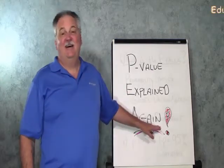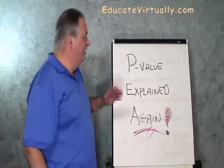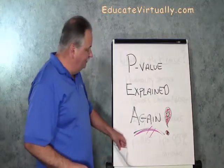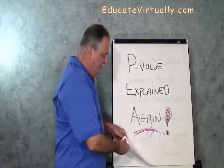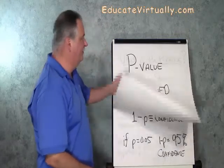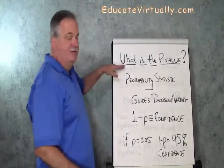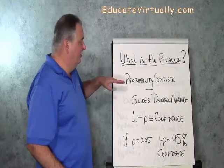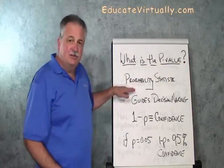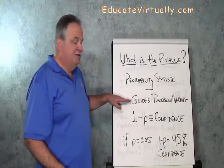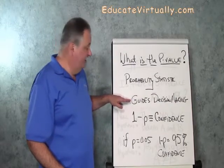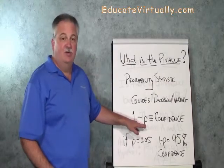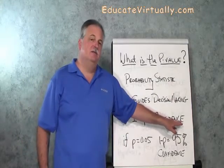P-Value explained again. We're going to start from the beginning and give you a good introduction for what P-Value is all about. The first question you may have is just what is the P-Value? It's actually a probability statistic. It helps us to guide our decision-making, and 1 minus the P-Value is defined as confidence.